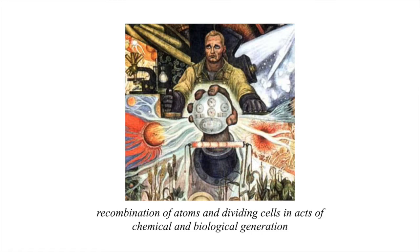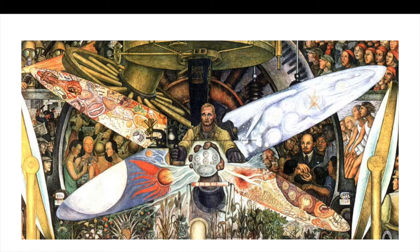In the center, a workman was depicted controlling machinery. Before him, a giant fist emerged, holding an orb depicting the recombination of atoms and dividing cells in acts of chemical and biological generation. From the central figure, four propeller-like shapes stretched at the corners of the composition, depicting arcs of light created by giant lenses anchoring the left and right edges of the space. Rivera described these as elongated ellipses. Within these, cosmological and biological forces such as exploding suns and cell forms were depicted.